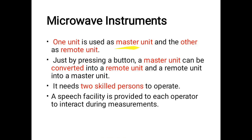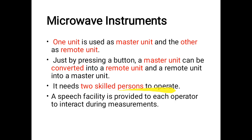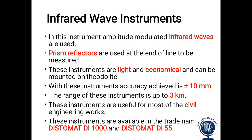The range of microwave instruments is up to 100 km. They consist of two identical units: a master unit and a remote unit. By pressing a button, the master unit can be converted into a remote unit and vice versa. They need two skilled persons to operate, and a speech facility is provided to each operator to interact during measurements.